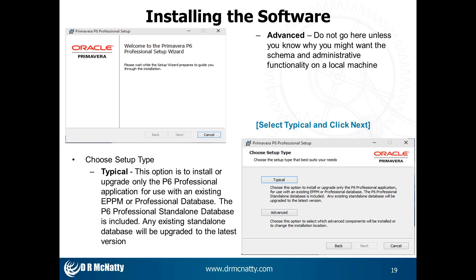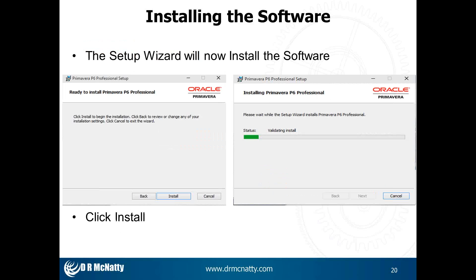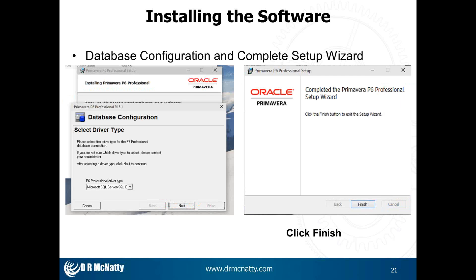With the Advanced option, we always note: do not go here unless you know why you might want the schema and administrative functionality on a local machine. For this instance, we're going to select Typical. At that point it's going to bring up the setup wizard that will install the software. When it's ready to install, click the Install button and it will go through the processes of setting up your P6 Pro. The next item is to set up your database configuration — we're going to select our driver type, in this instance SQL Server SQL Express, and then click Finish to complete the setup wizard.